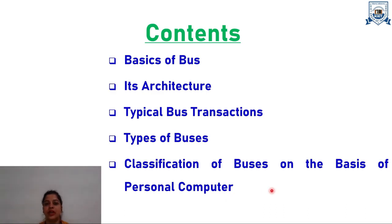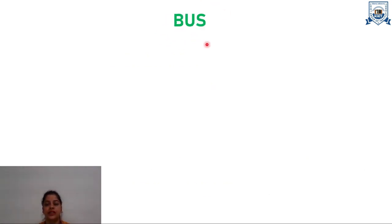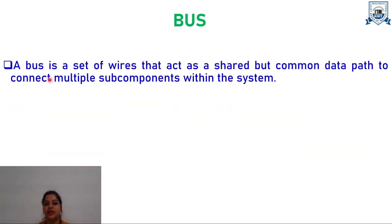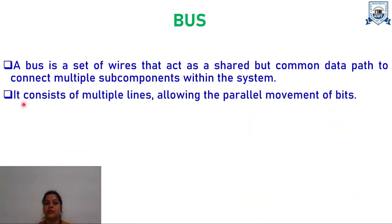At the end of this video lecture, students would be able to understand the concept of bus and its related topics. What is a bus? Just as a bus on a road carries passengers from one location to another, within the computer system, data needs to be transmitted from one subcomponent to another — these subcomponents being memory, I/O devices, and CPU. So a bus is a set of wires that act as a shared, common data path to connect multiple subcomponents. These wires are also called lines, and each line carries a signal of 1 or 0 — either an address or data. A bus consists of multiple lines allowing the parallel movement of bits.